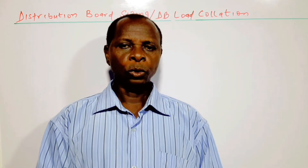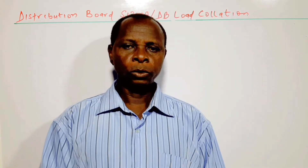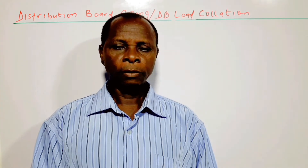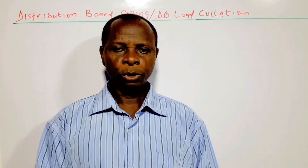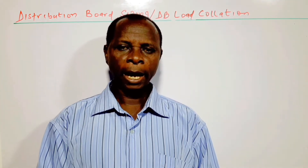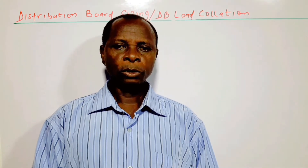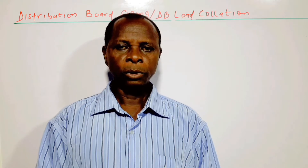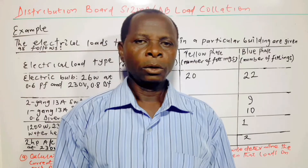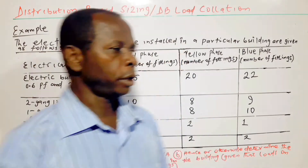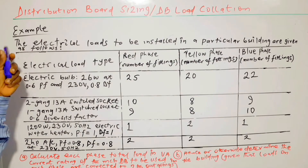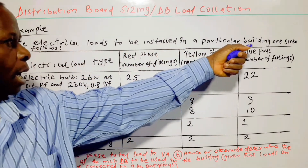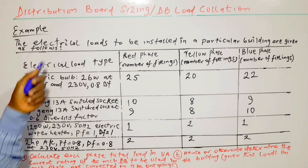This video is about how to collate electrical loads and how to calculate the rating and the size of the MCB distribution board required. For the purpose of clear understanding, I will make use of an example as follows. Moving on to the example, the electrical loads to be installed in a particular building are given as follows.